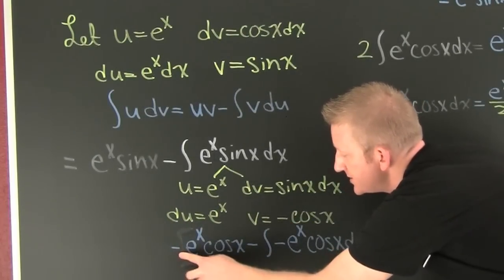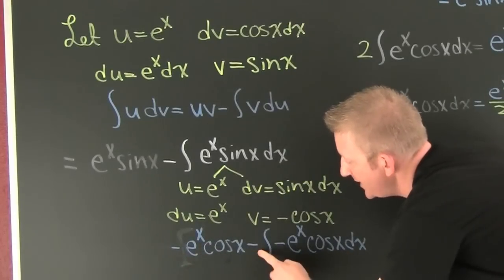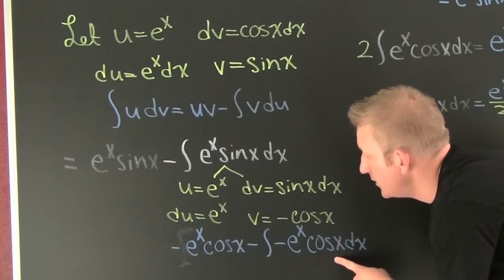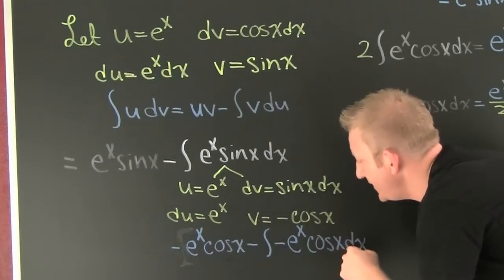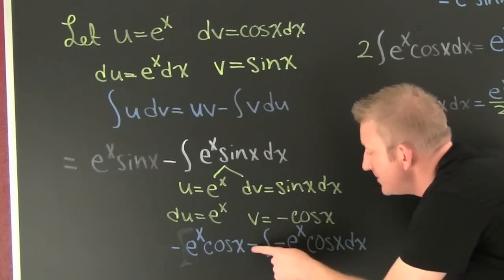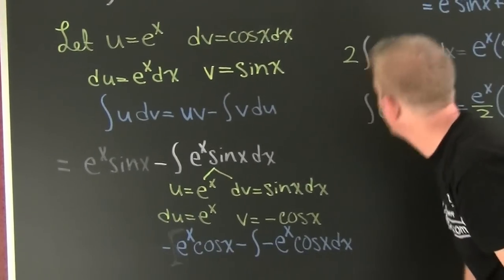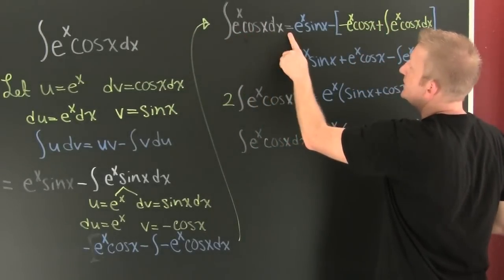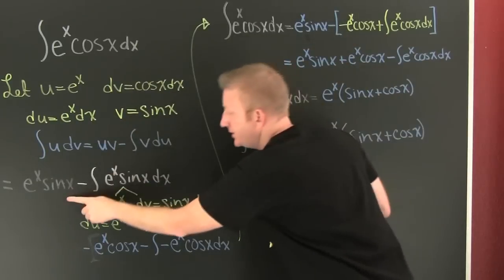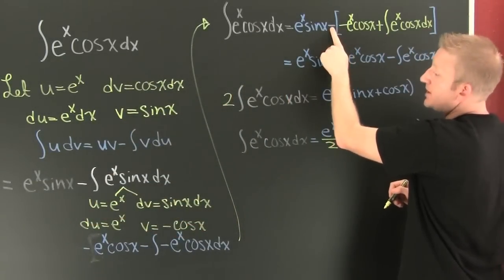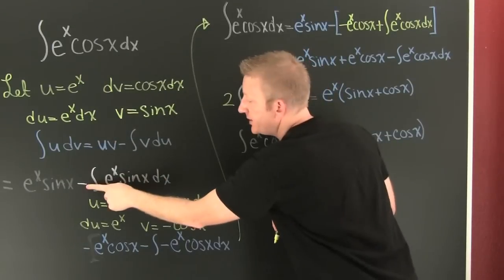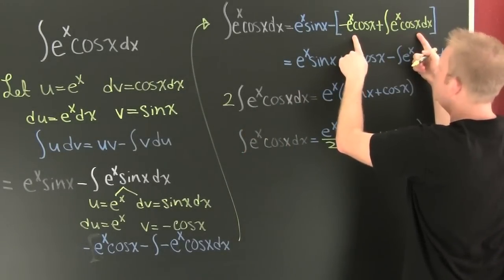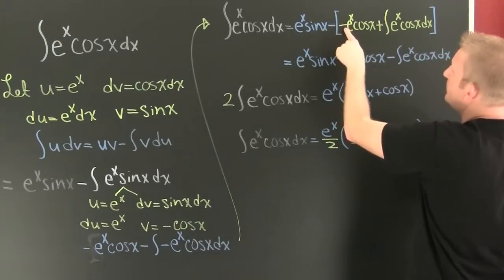So what is this? This is u·v minus the integral of v du. Now that we have that straight, minus and minus is going to make plus, and that's what brings us up here. My original integral is equal to this first part. That minus was on the outside of everything because it came from here. We found out what this integral was — it's this stuff down here — so I'm putting it right back up there. Now I'm going to distribute it: it makes plus, it makes minus.